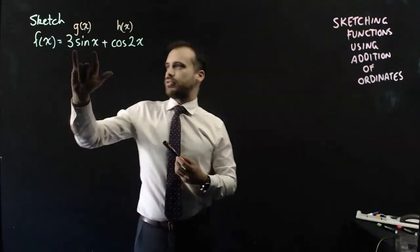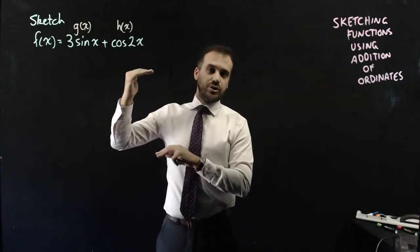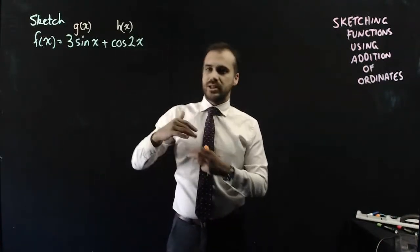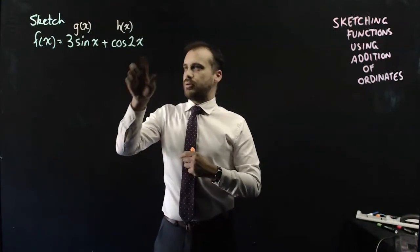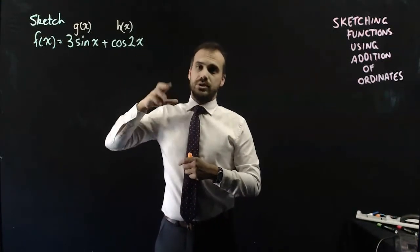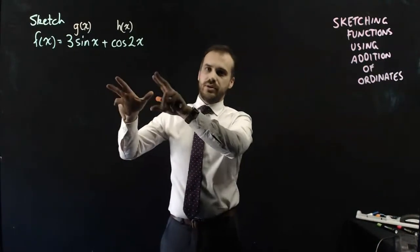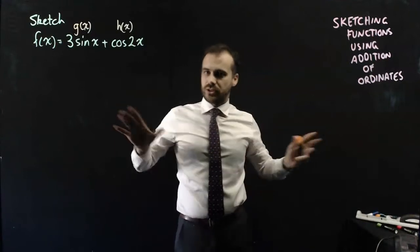Now, just briefly, 3sin(x) that's going to have an amplitude of 3, a period of 2π. Cos(2x), that's going to have an amplitude of 1, and a period of 2π over 2, which is π. So they have different amplitudes, they have different periods, but they're both periodic functions.